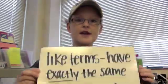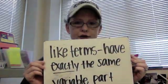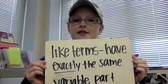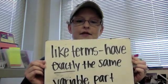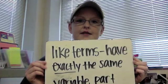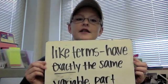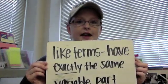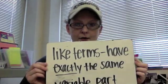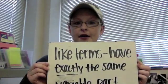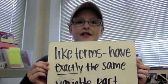Our final vocabulary term is like terms. To be like terms, you must have exactly the same variable part. This means that x goes with x, y goes with y, x squared goes with x squared, a squared b can only go with a squared b. So whatever the variable part is, it has to be exactly the same.